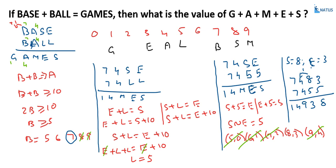Now what we require is G plus A plus M plus E. G equals 1, A equals 4, M equals 9, E equals 3, and S equals 8. The sum is 1 plus 4 equals 5, plus 9 equals 14, plus 3 equals 17... wait: 1 plus 4 is 5, plus 9 is 14, plus 9 is... the answer is 25, which is the required answer.